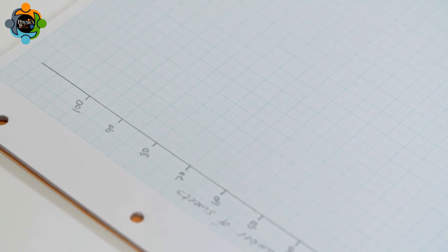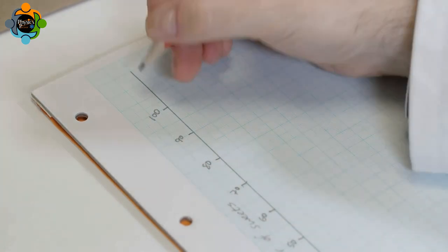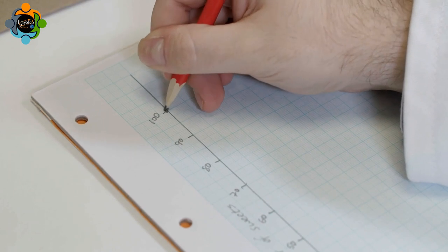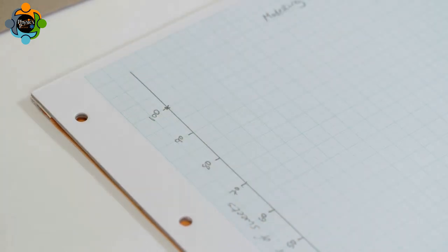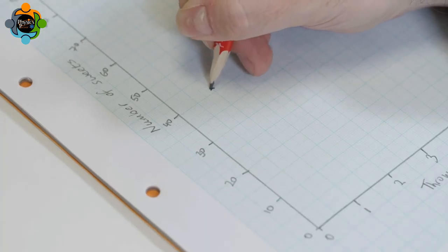A cross is placed on the graph for every result in the table. There were 100 sweets undecayed before the first throw, so this is the first plot made on the graph. The other plots are drawn on the graph marking the number of sweets that remained after each throw.